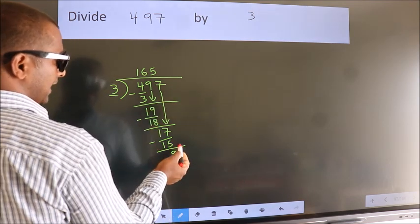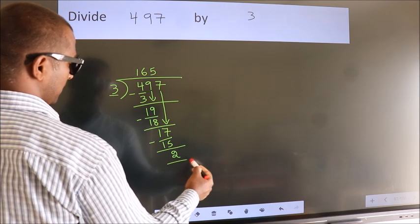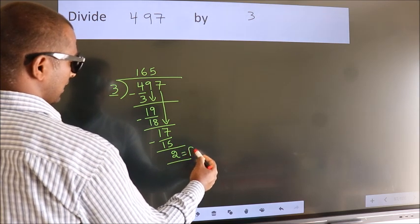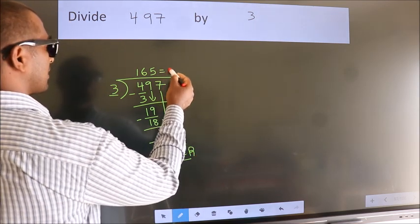No more numbers to bring it down. So we stop here. This is our remainder. This is our quotient.